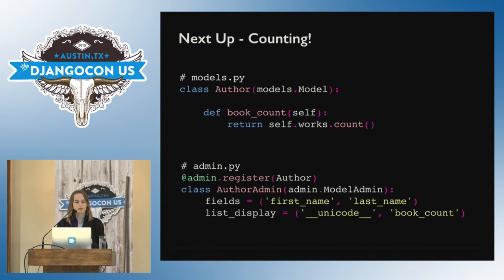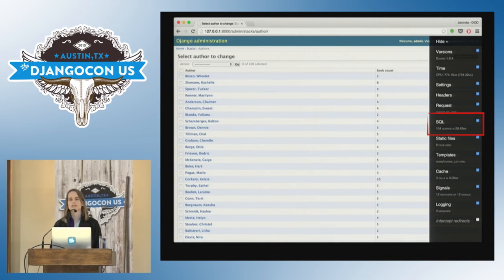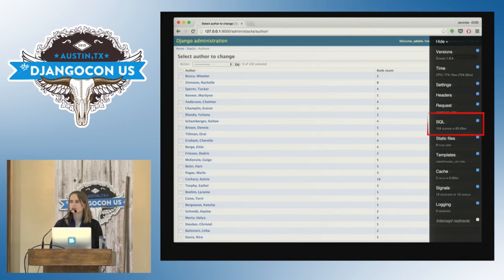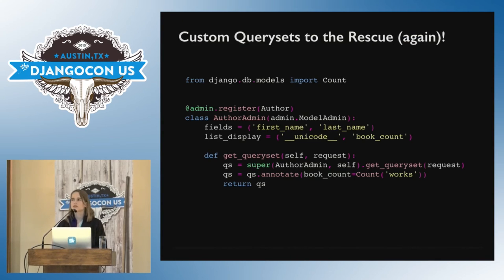The last example we're going to go through is counting. Your users have come back and they want to see how many books an author has written that you have in your library, in the list view. We add a callable with self.works.count(), add book_count to list_display, and we have 104 queries again — one count query for every row. This one is a little trickier. There's no foreign key, there's no reverse foreign key relationship, so select_related and prefetch_related won't work. The answer is to use Django's aggregate functionality — specifically, annotate.